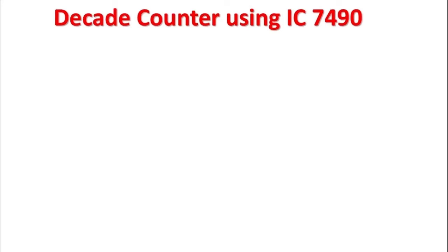Hello viewers. In this video lecture I will demonstrate how to design a decade counter using IC 7490. IC 7490 is an asynchronous decade counter IC. Decade counter means it counts 10 different states from 0000 to 1001.